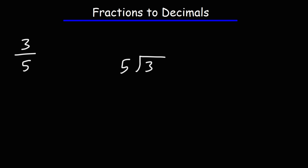Now 5 doesn't go into 3, so what we need to do is add a 0 and a decimal point. We're going to treat 3.0 as if it's 30. So how many times does 5 go into 30? 5 goes into 30 six times — we know 5 times 6 is 30. But this is actually 3.0, so 5 times 0.6 is 3.0. We need to put the decimal point directly above it.